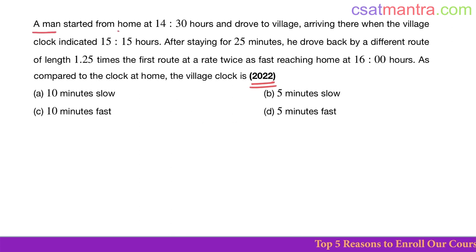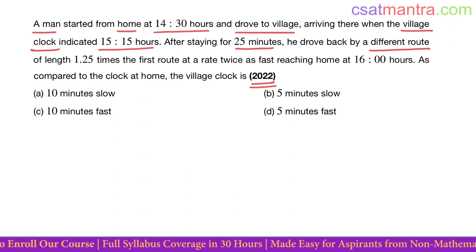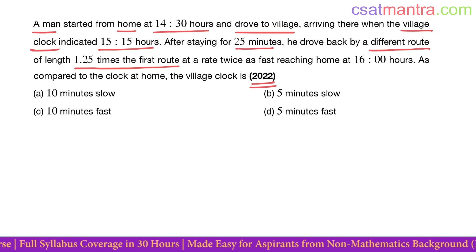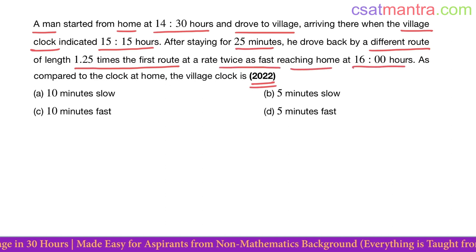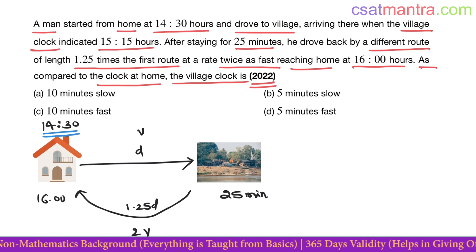A man started from home at 14:30 hours and drove to village, arriving there when the village clock indicated 15:15 hours. After staying for 25 minutes, he drove back by a different route of length 1.25 times the first route at a rate twice as fast, reaching home at 16:00 hours. As compared to the clock at home, the village clock is? He started from home at 14:30 hours and reached village.